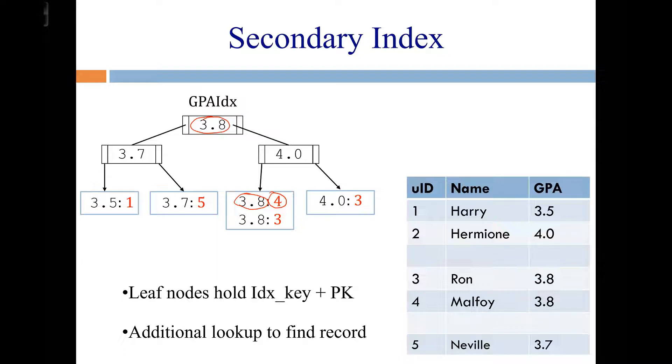So over here, we have a GPA of 3.8 and a UID of 4, where that 3.8 came from. And notice also, this is how a secondary index can handle duplicates. If the column is allowed to have duplicates, then all we need to do is put duplicate search keys into the leaf node, but have different corresponding primary keys for each of them. So there are those primary keys corresponding to those two people that have 3.8 GPAs.